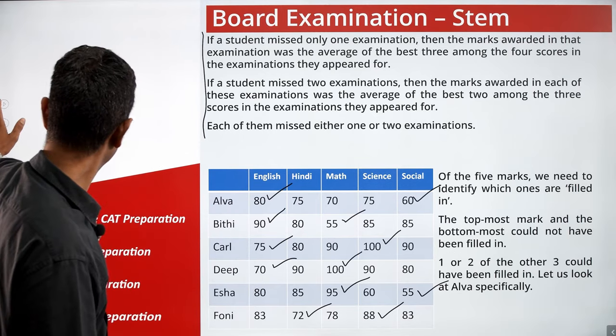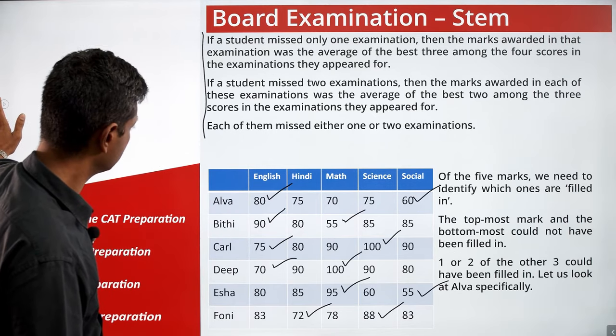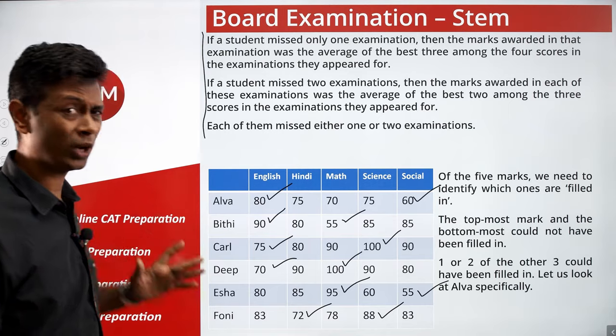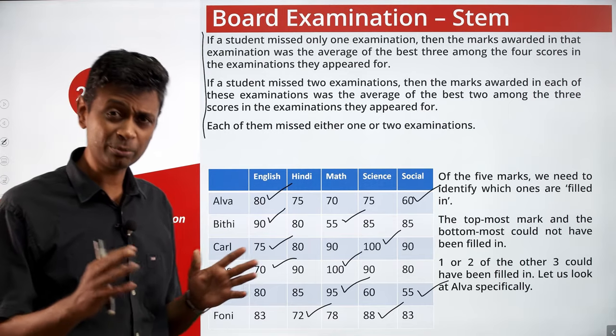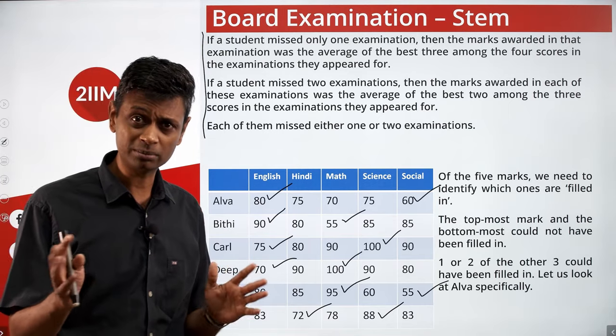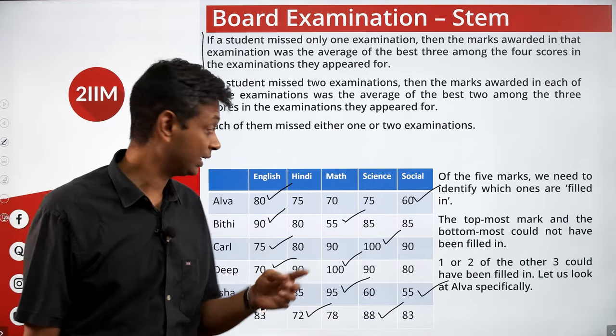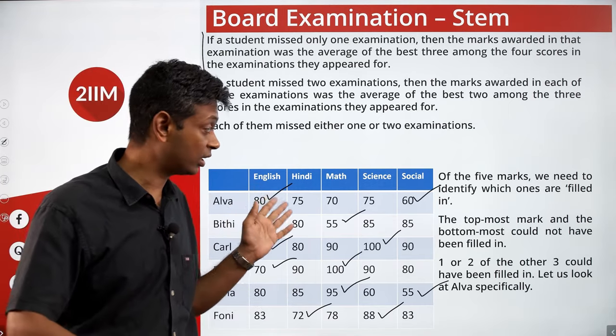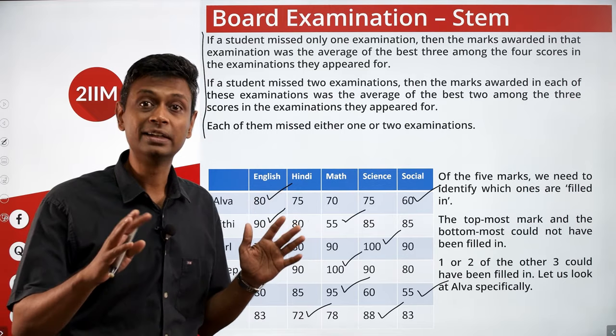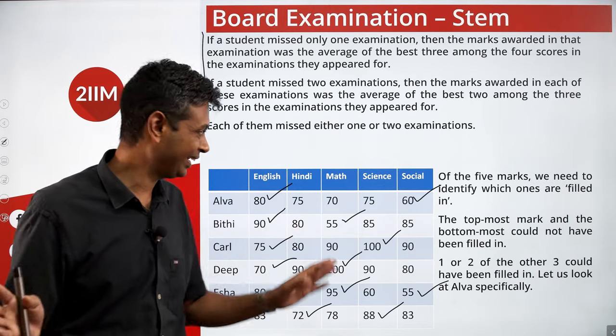We would have had to worry if there were multiple identical numbers — for example, 100, 100, 100 — in which case even the maximum could have been an average. Luckily, none of that has happened.